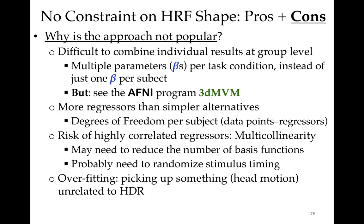However, the approach is not very popular. It's difficult to combine individual results at the group level — instead of one amplitude per subject per task, you may have 10 betas. There is an AFNI program called 3DMVM, but it's not commonly used. You also have more regressors than simpler alternatives, so if they weren't needed, you sacrifice degrees of freedom (statistical precision) to estimate something of no value. Overfitting is also a risk: stimulus-correlated head motion can be picked up, so you need to examine your model fitting more carefully than with a simple block function.